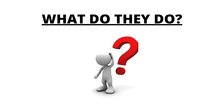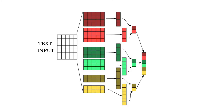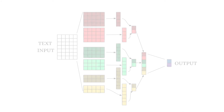So what exactly do these algorithms do? In general, they first read the text input before passing it through several layers where the input is transformed or processed by the algorithm. In the end, the algorithm gives a final output on whether the article is real or fake.